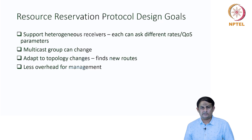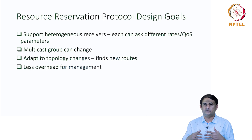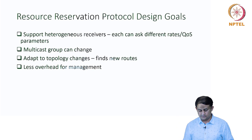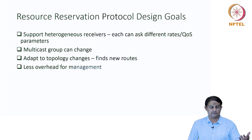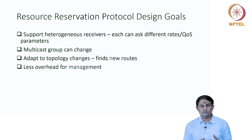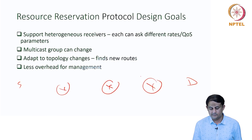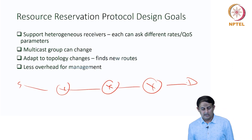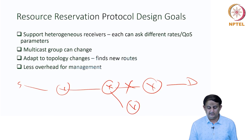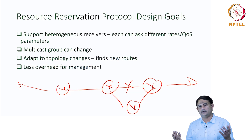One feature is that requirements from different receivers can be heterogeneous — R1 asking for some bandwidth, R2 for a different bandwidth — and RSVP supports this heterogeneity in QoS requirements. It also supports multicast and group transmissions. Interestingly, it has also been designed to adapt to topology changes. For example, if a link breaks mid-transmission, RSVP can find an alternative path and make a fresh reservation to maintain the quality of service.